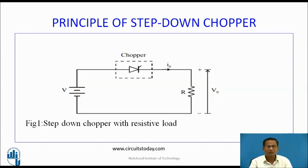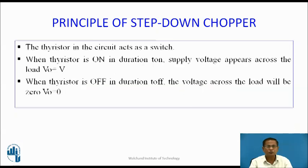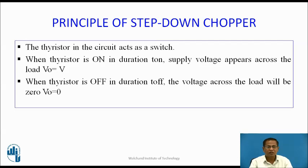Therefore, the current flows through V, chopper switch, and R, and the input voltage appears across the output. During T-off, when the thyristor is off, it acts as an open circuit. The voltage across the load will be zero; therefore, V_0 is equal to zero.